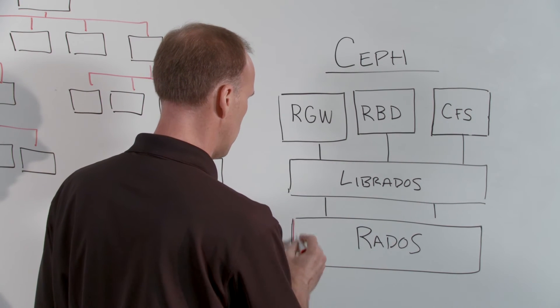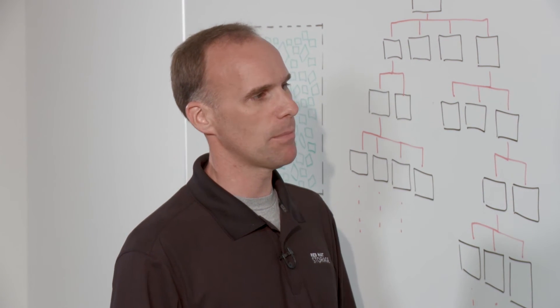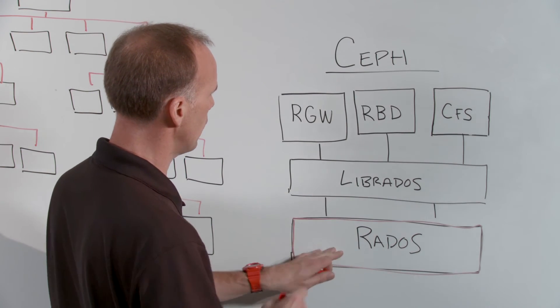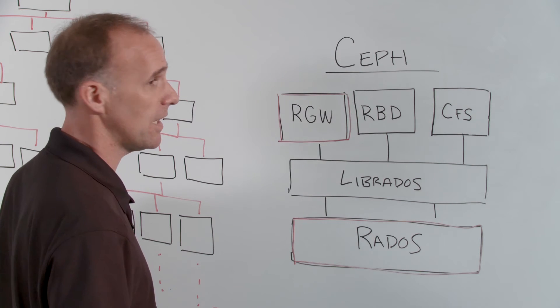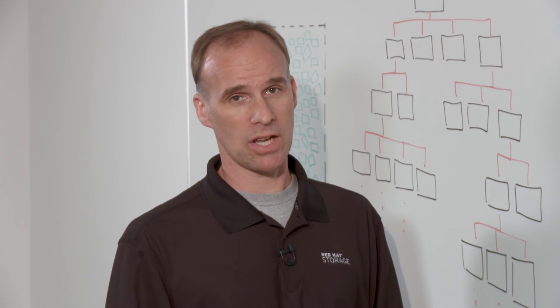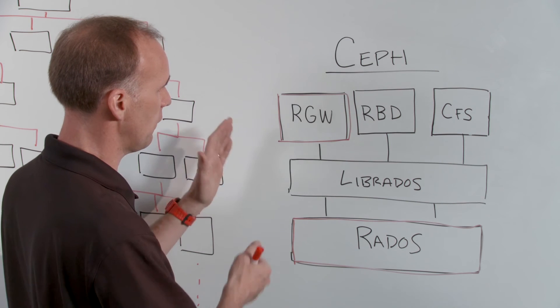Ceph was conceived from the very beginning to be a web-scale type storage infrastructure, though that's kind of gotten forgotten over the years — most people have been using it for block or OpenStack installations. But it is an object store. The RADOS gateway is the main interface for object access, and there are a couple of ways you can do it: through the S3 interface, the Swift interface for OpenStack, or even a custom API based on the APIs that are provided.